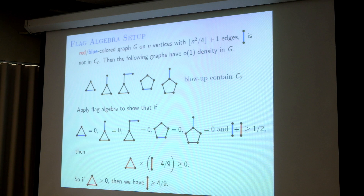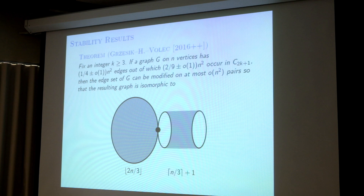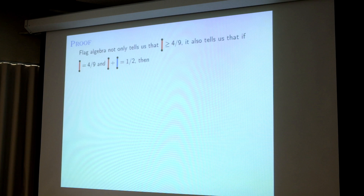So this product inequality implies two cases: either red edges are at least 4/9, or triangle density is zero. We deal with the two cases separately without going through the full proof. Remember that in the introduction to flag algebra, it tells you that instead of just proving inequalities, it can also tell you information about the extremal graph — namely, it can tell you that for some small graph its density is zero in the extremal structure. We use that additional information to prove the stability result.